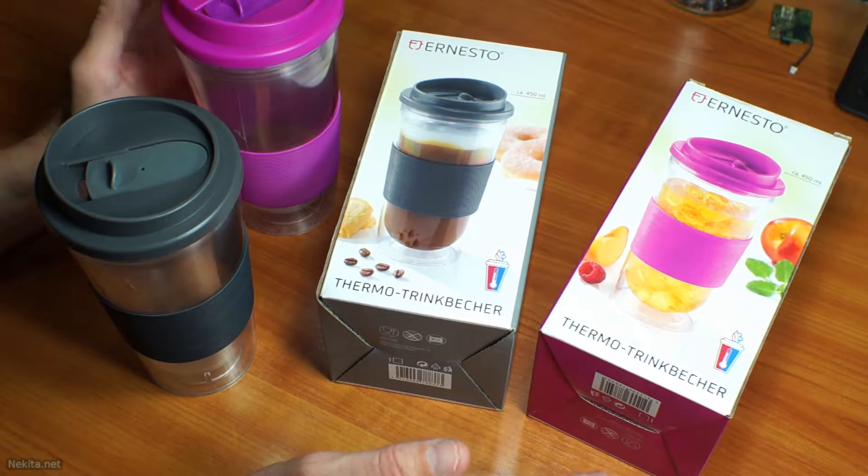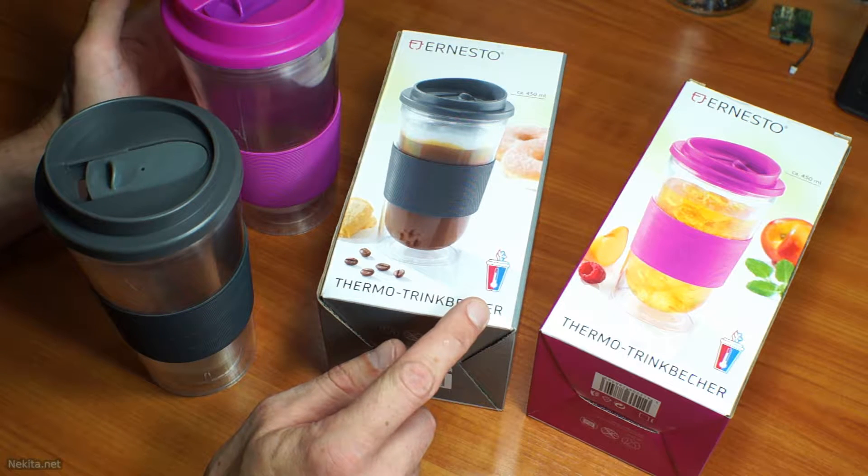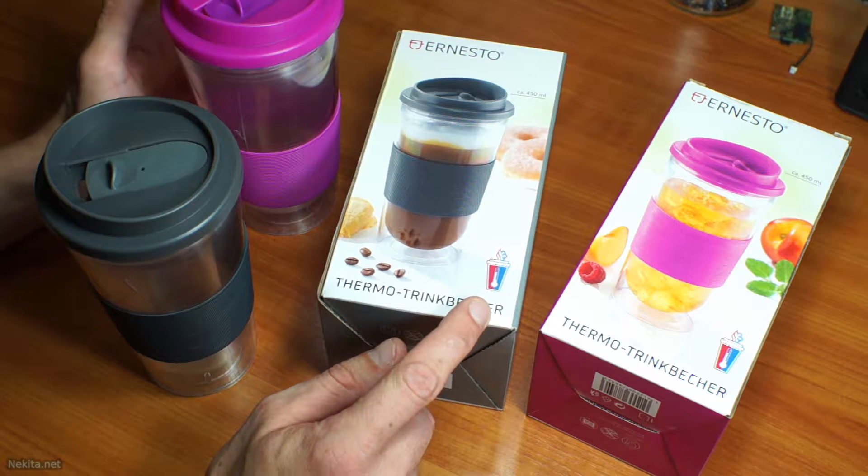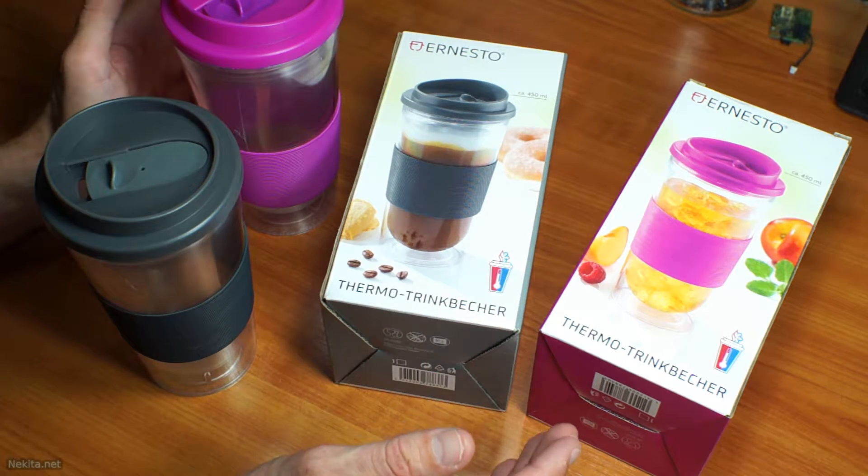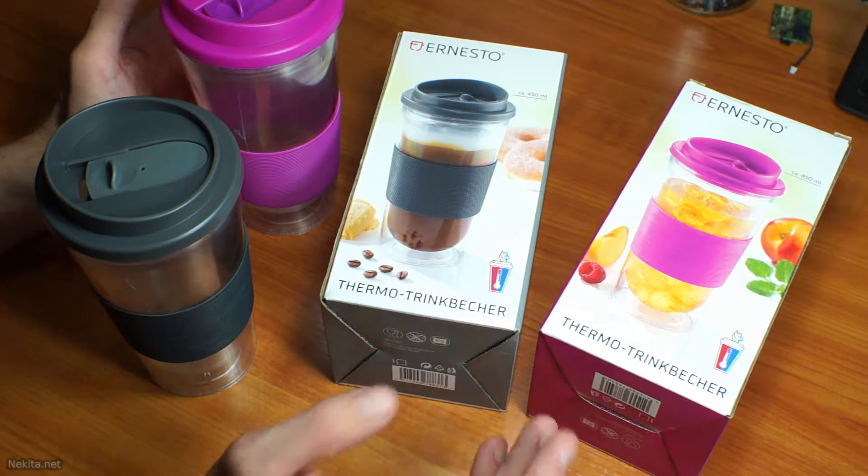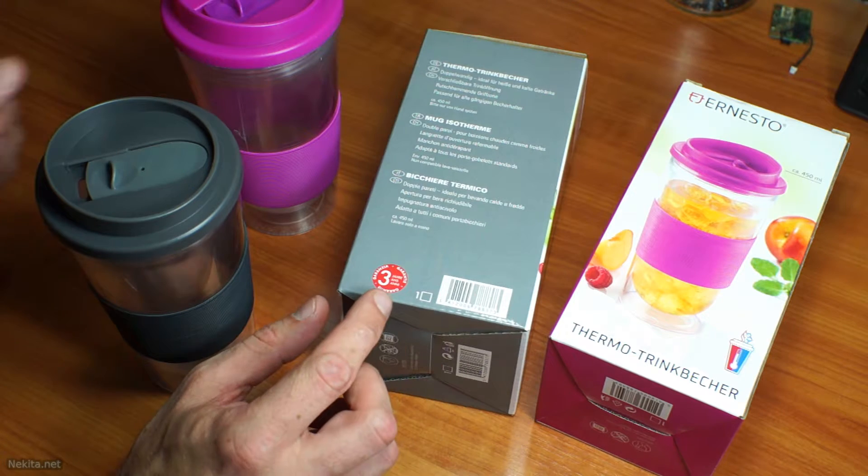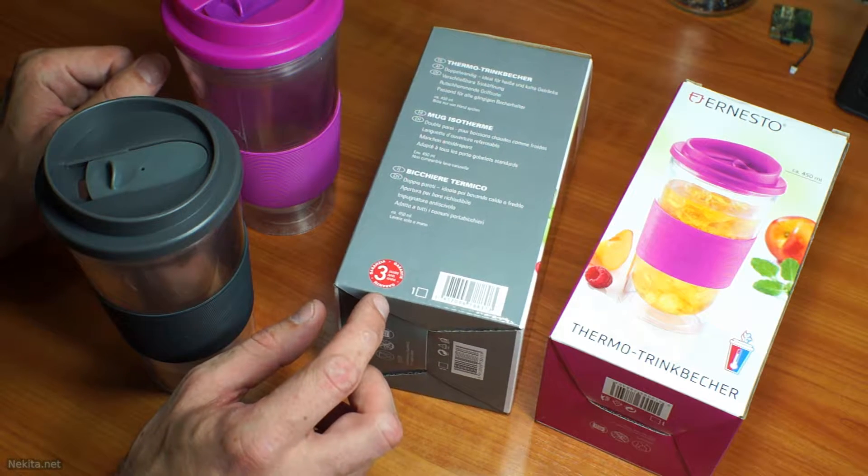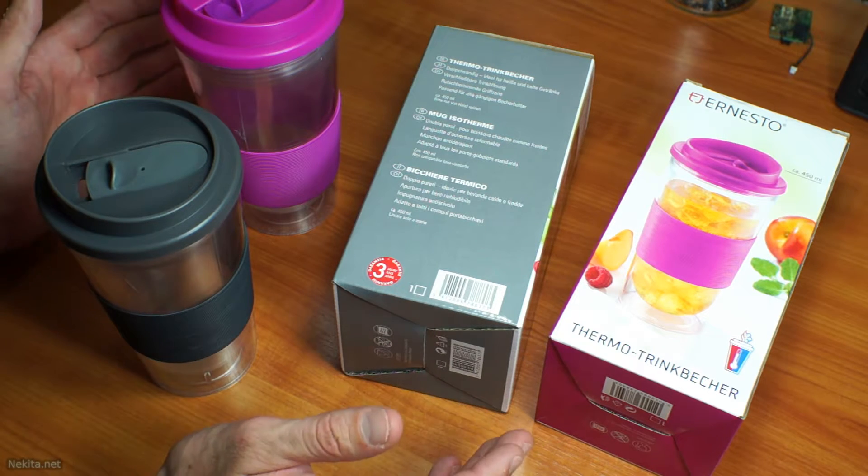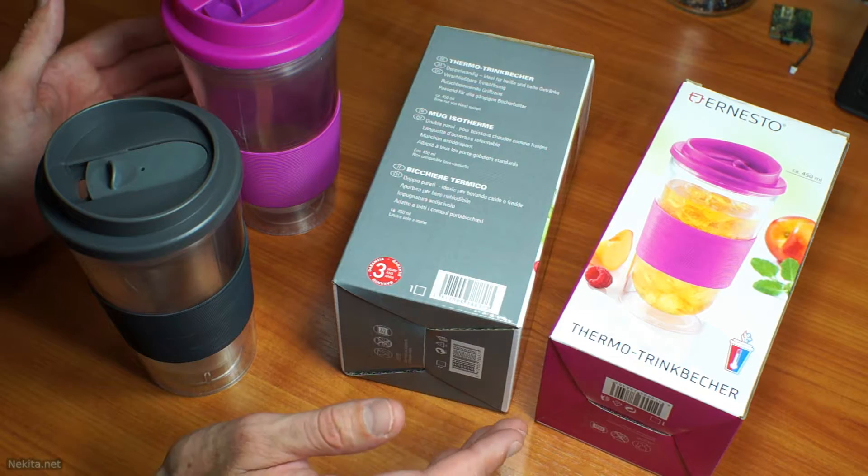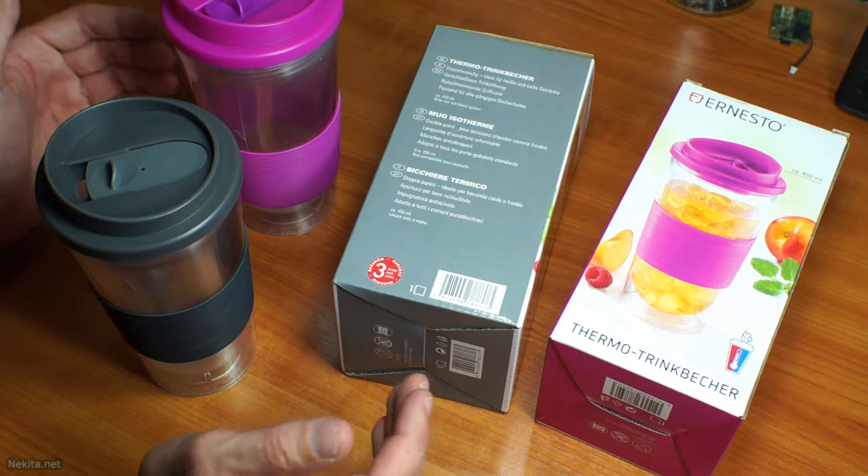Before going in depth on this review I have to point you out to this little symbol which denotes that this thermomug can be used with both hot and cold beverages, something very standard for a thermomug. Also, on the side of the packaging there is a little indication that you've got 3 years warranty. Well, after 2 weeks of intense usage, these thermomugs are both basically busted.